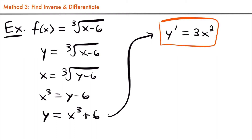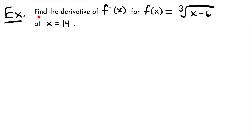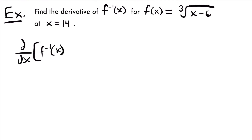All three methods give us the same answer of three x squared. When you want to find the derivative of an inverse function, you can pick between these three methods, and you should get the same answer no matter which one you choose. Now one more quick example: we want to find the derivative of the inverse function of f(x) equals the cubed root of x minus six at x equals 14. This is the same function we've been working with, and the focus is showing what it means to find that derivative at x equals 14.